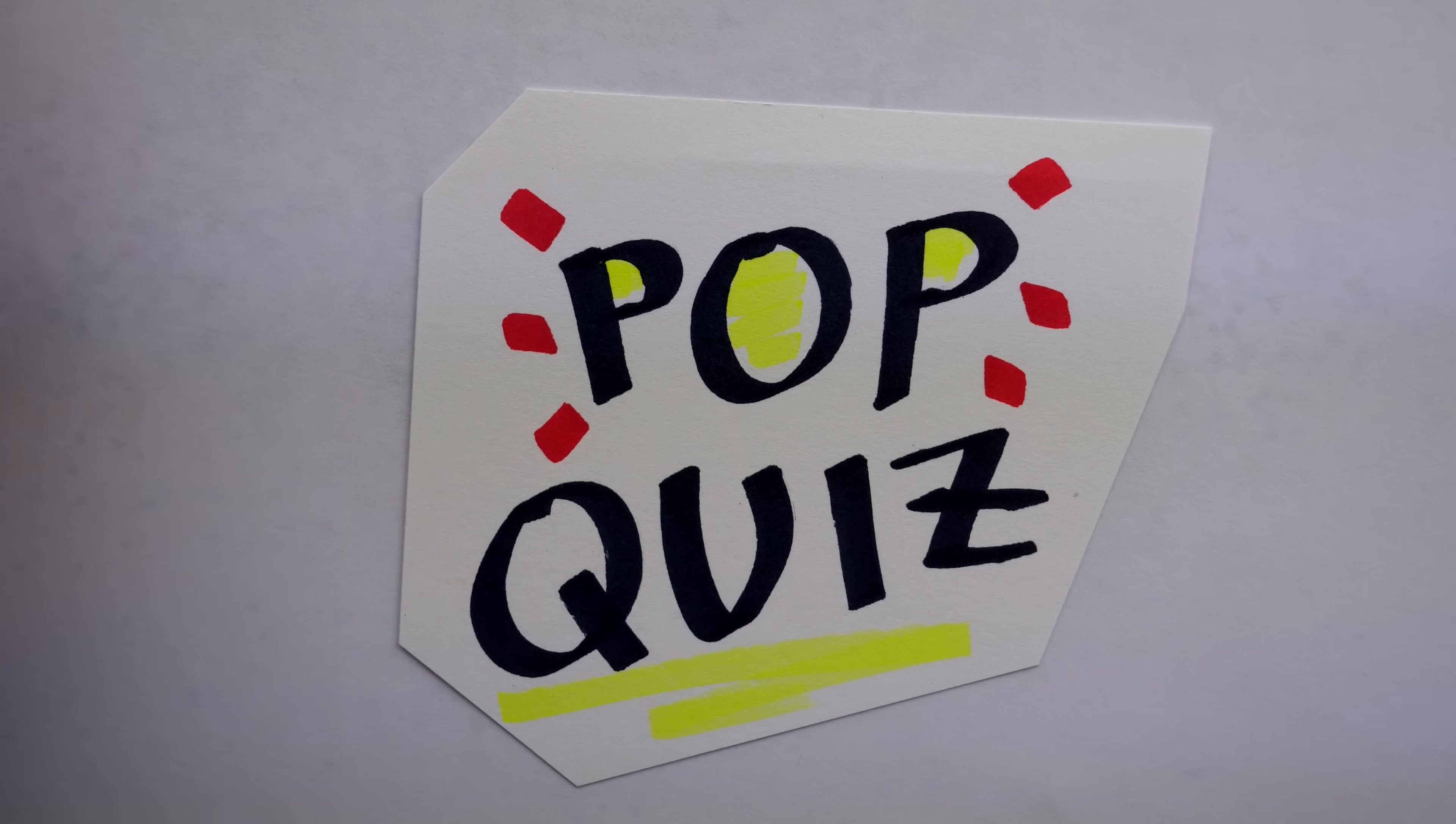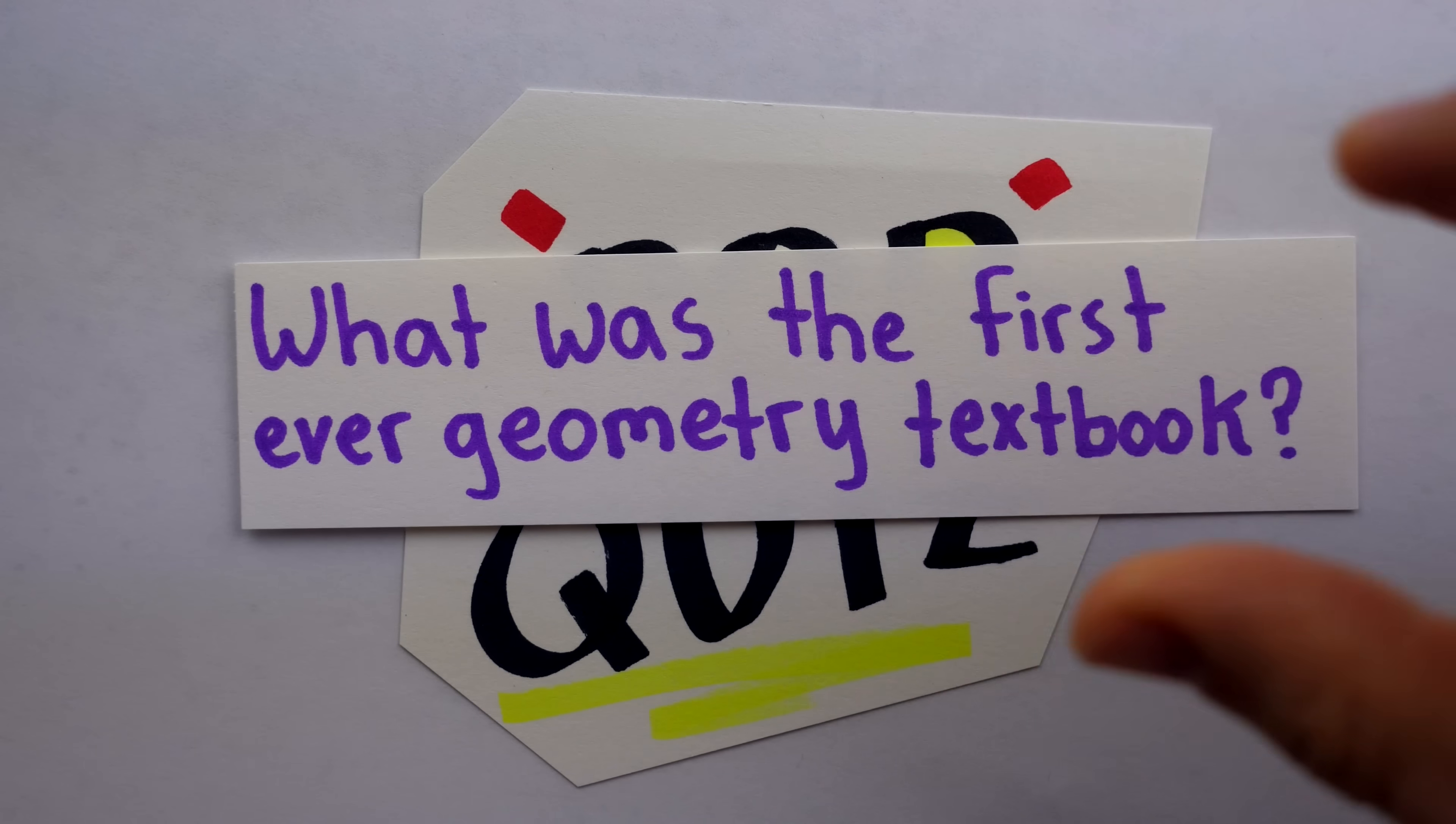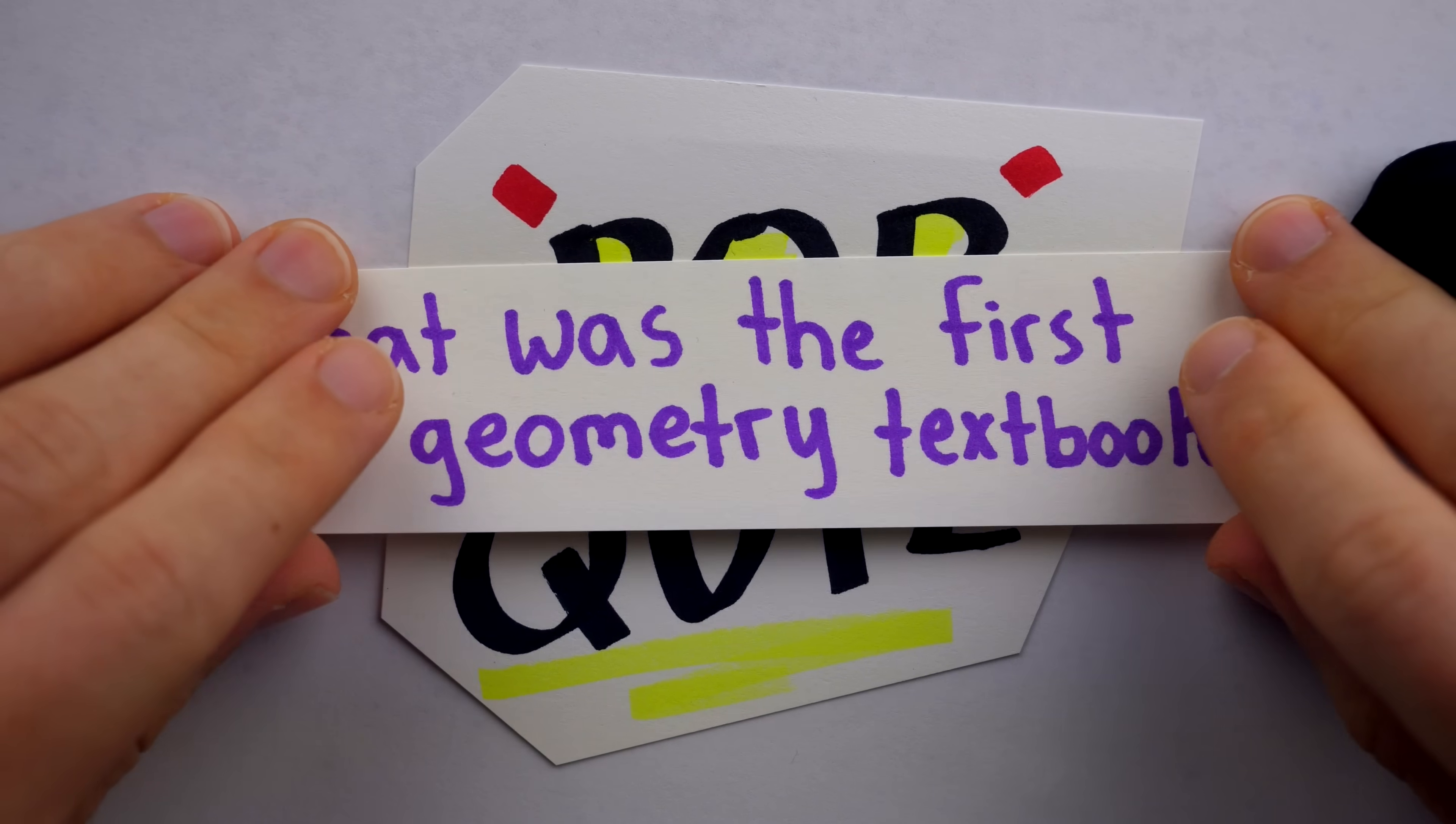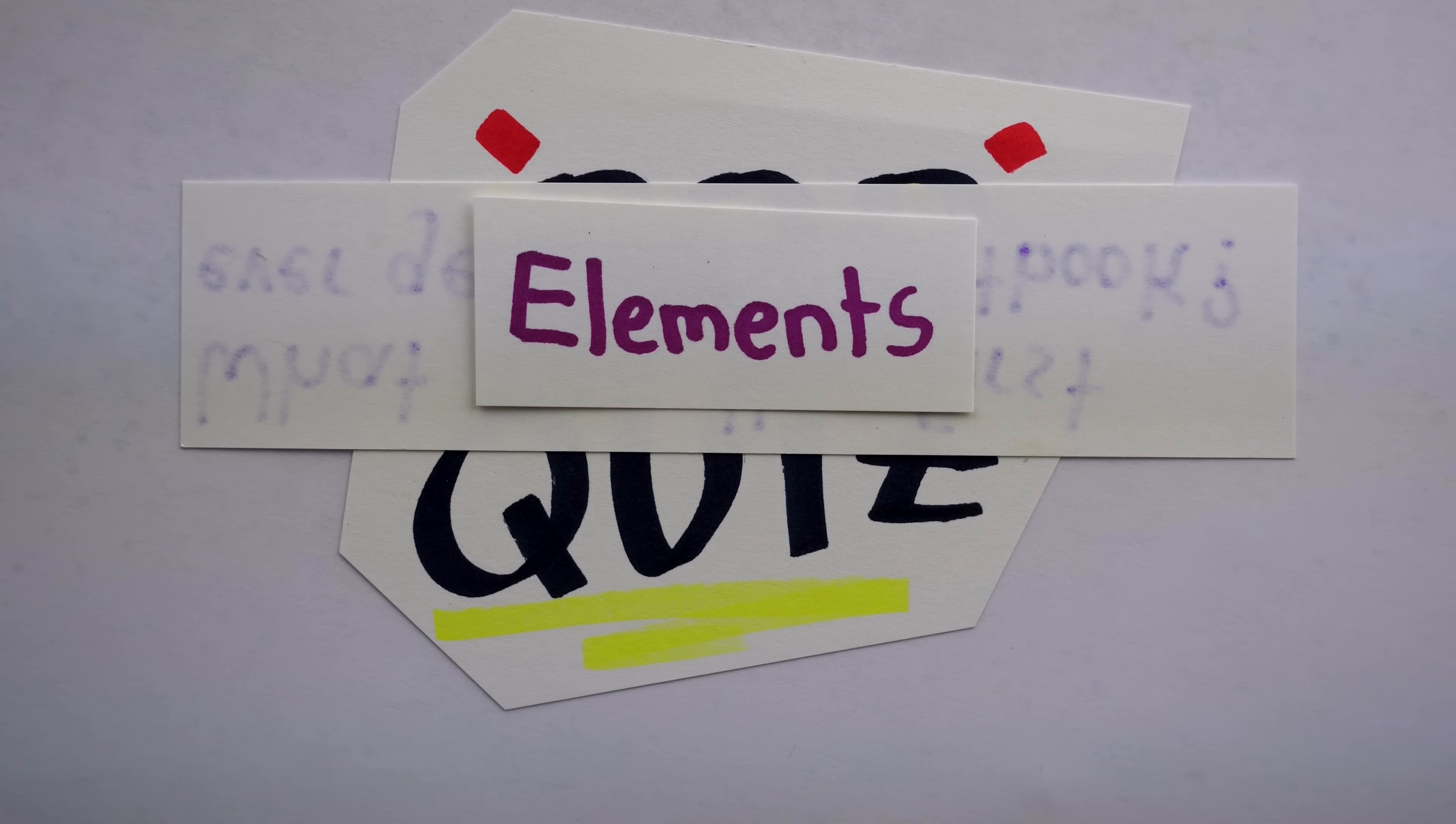Pop quiz, nerds. What was the first ever geometry textbook? Three, two, one. Got your answer? If you said the elements, you're right.